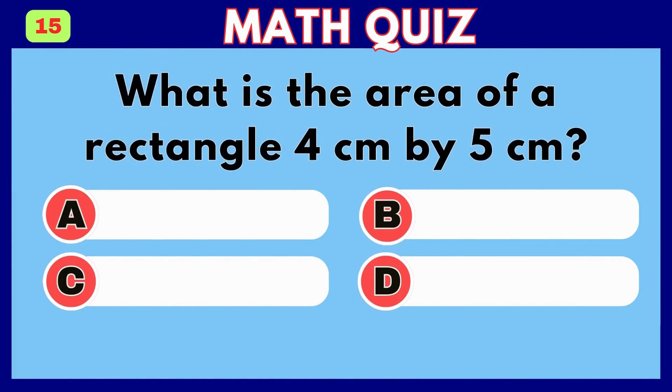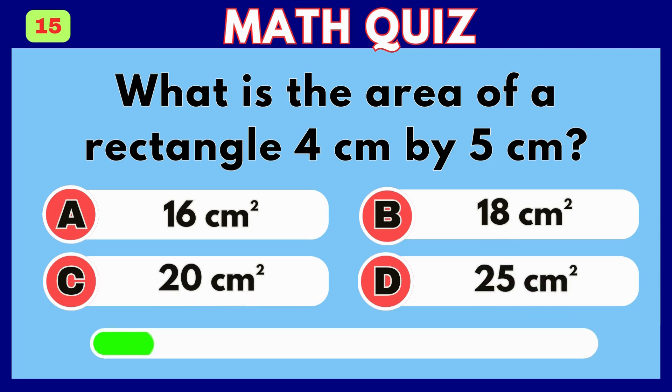What is the area of a rectangle that is 4 centimeters by 5 centimeters? Answer C, 20 square centimeters.